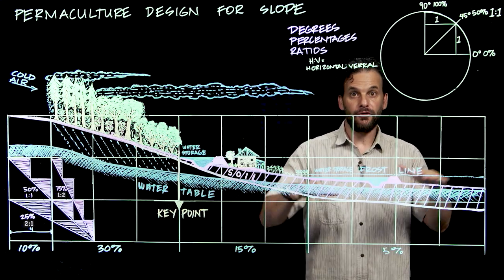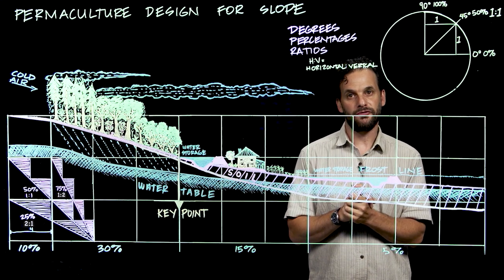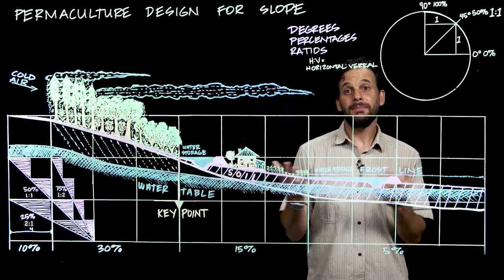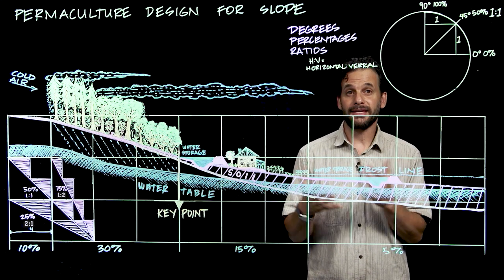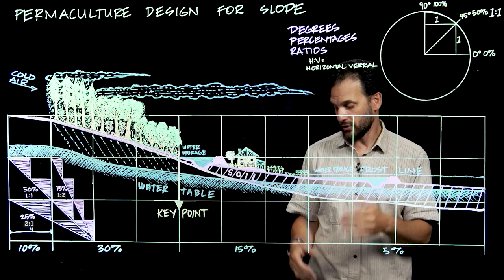So the types of cultivation practices that happen in this lowest zone that's below the winter frost line would be elements that are not susceptible to late and early frosts. So these may be more like zone two, three activities like trees, animals, irrigated horticulture.